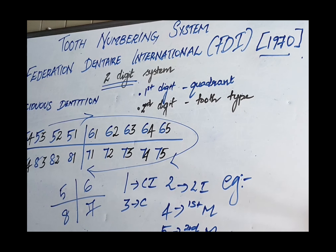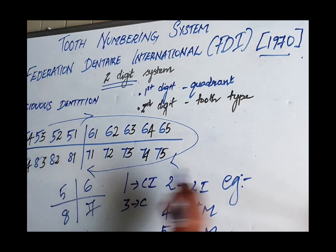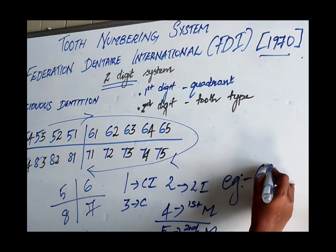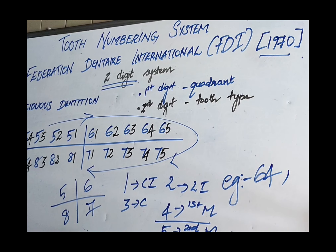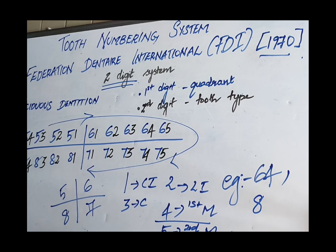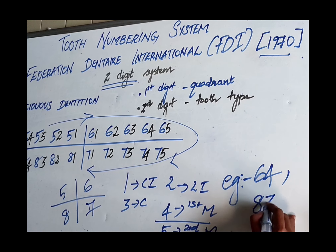Examples in the FDI deciduous system: maxillary left first molar — quadrant 6, first molar is 4, so it is 6, 4. Mandibular right canine — quadrant 8, canine is 3, so it is 8, 3.